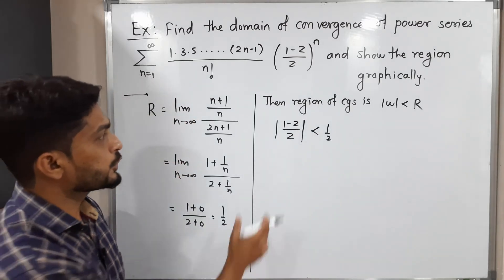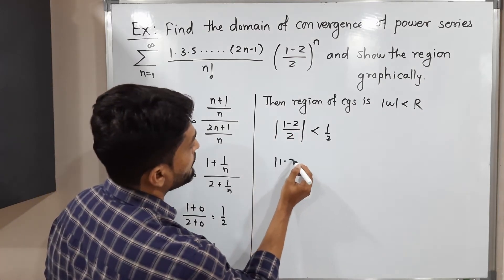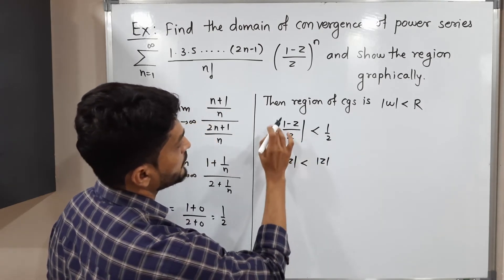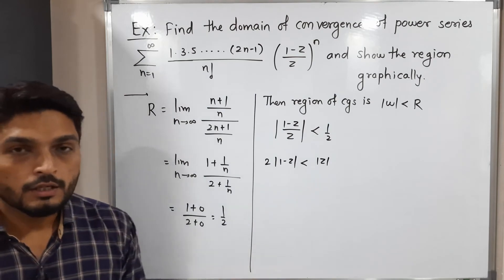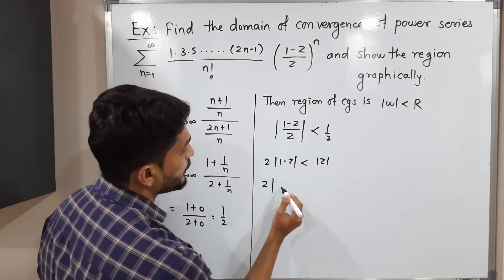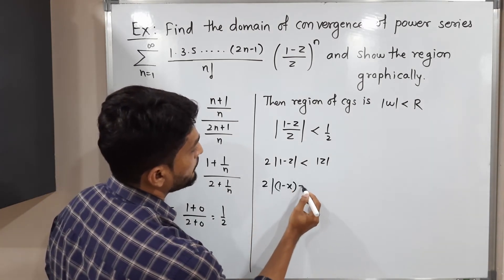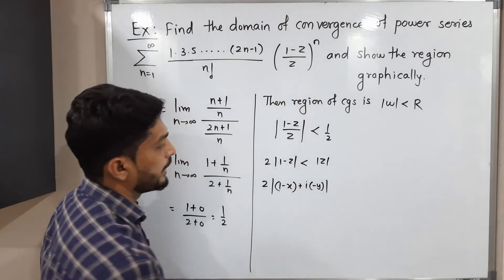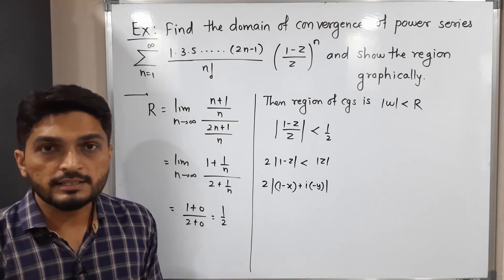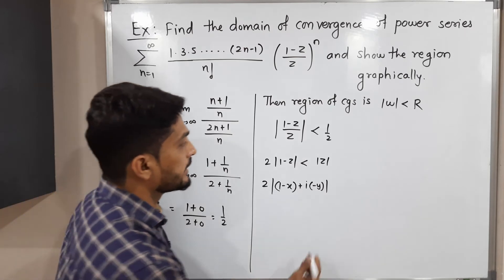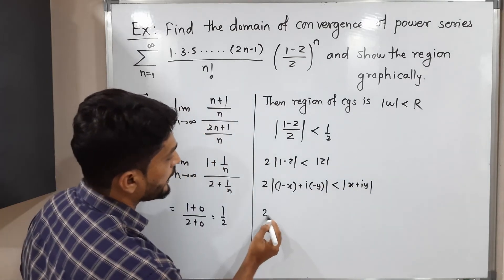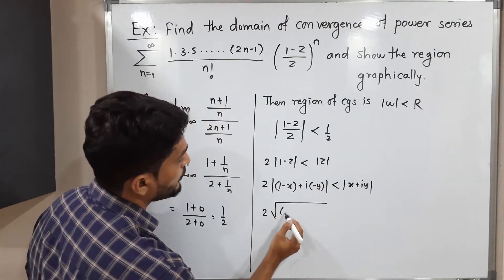Separating the modulus: |1 minus z| / |z| < 1/2, which gives 2|1 minus z| < |z|. Substituting z = x + iy: 2|1 minus x minus iy| < |x + iy|, noting that the signs of x and y change due to the minus sign outside.